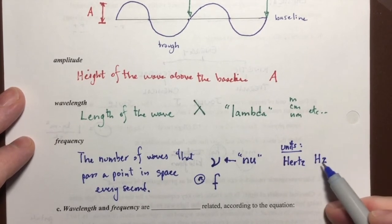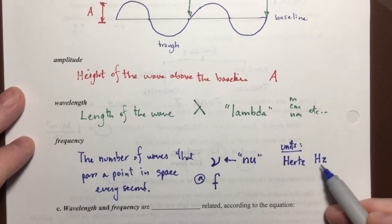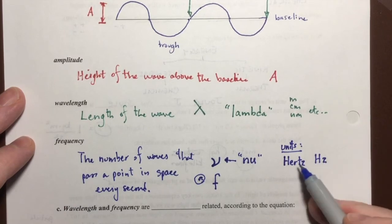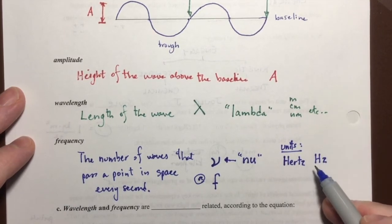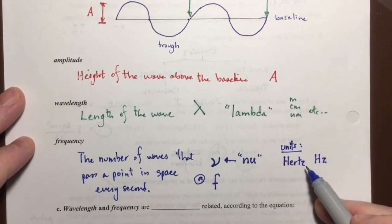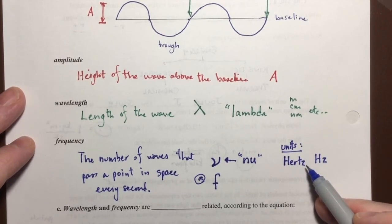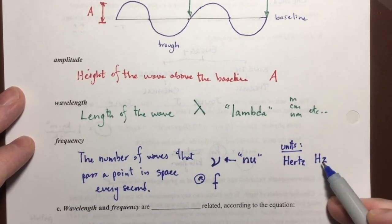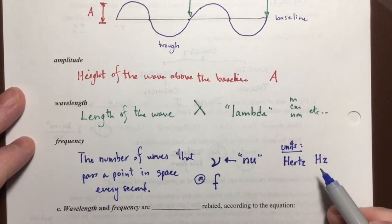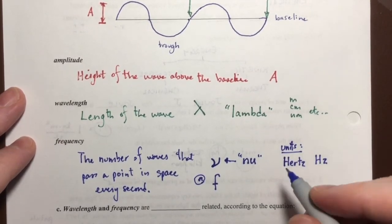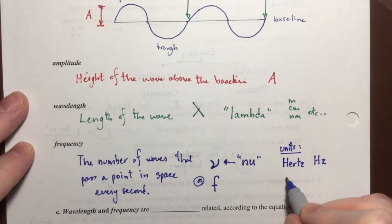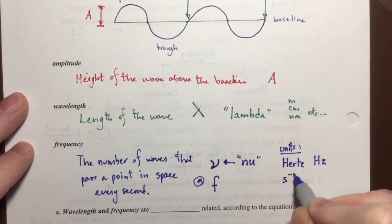That literally means cycles per second or events per second. We're not going to use that one in this class because it does not allow us to cancel out our units neatly. And we love being able to cancel out our units. But if you see hertz, then you will know what they're talking about.